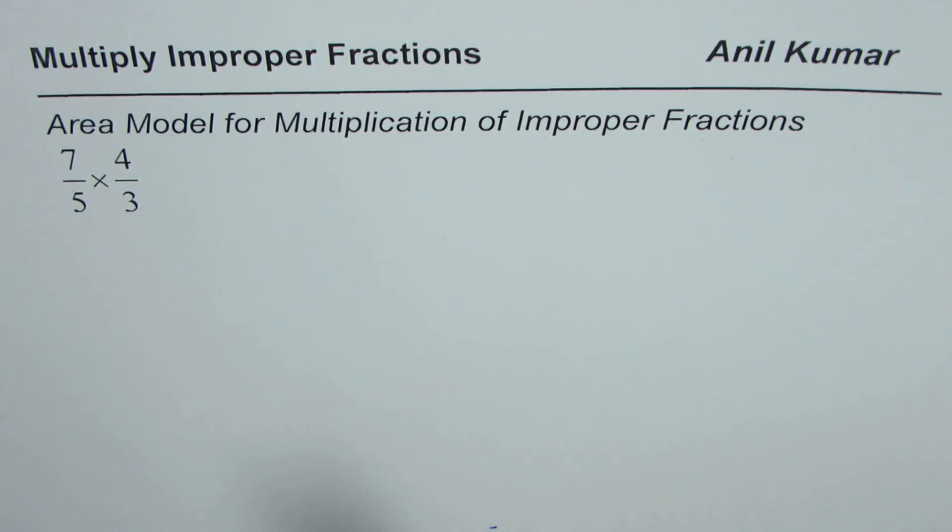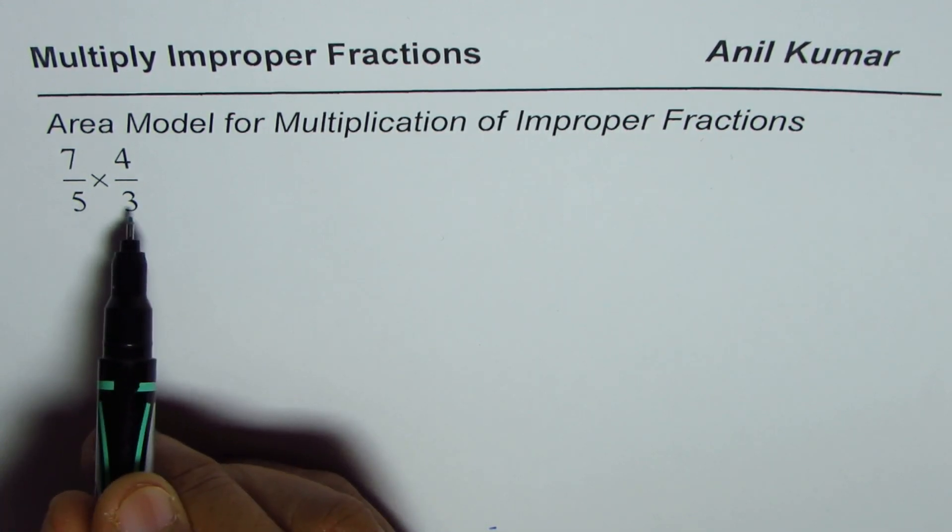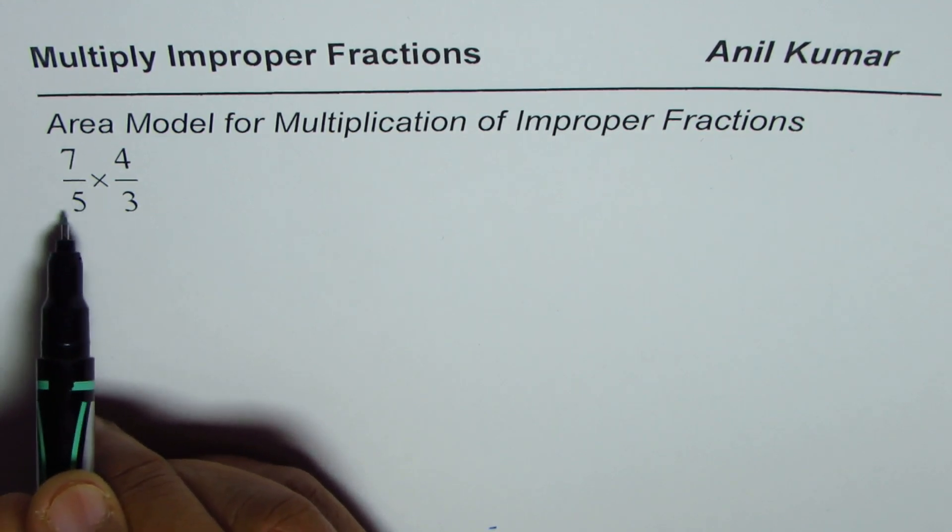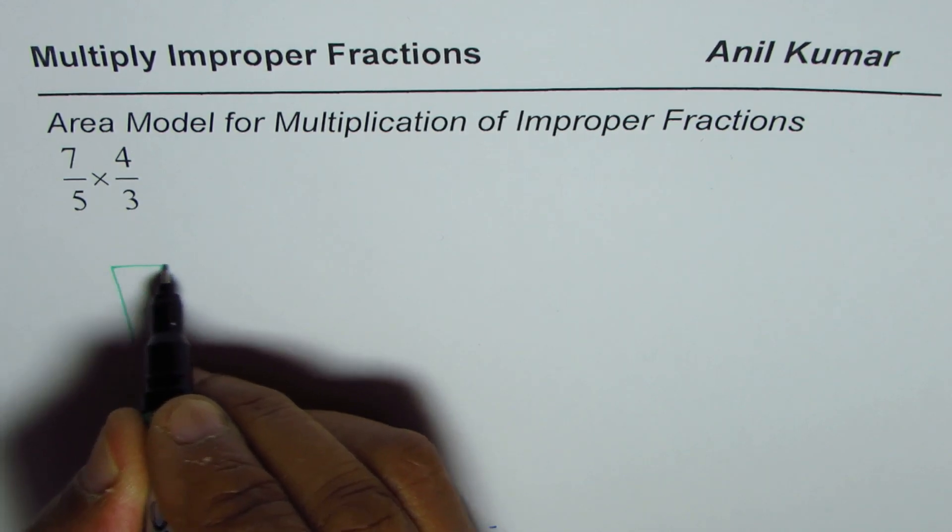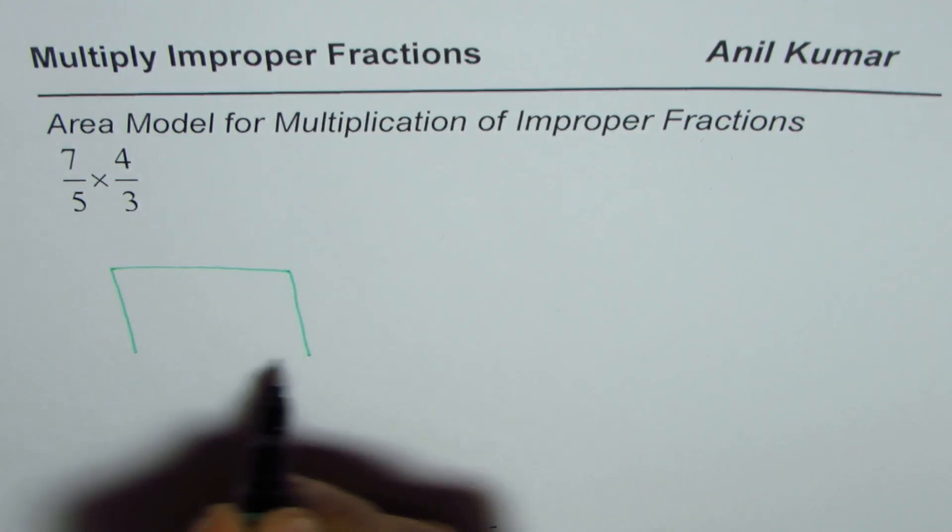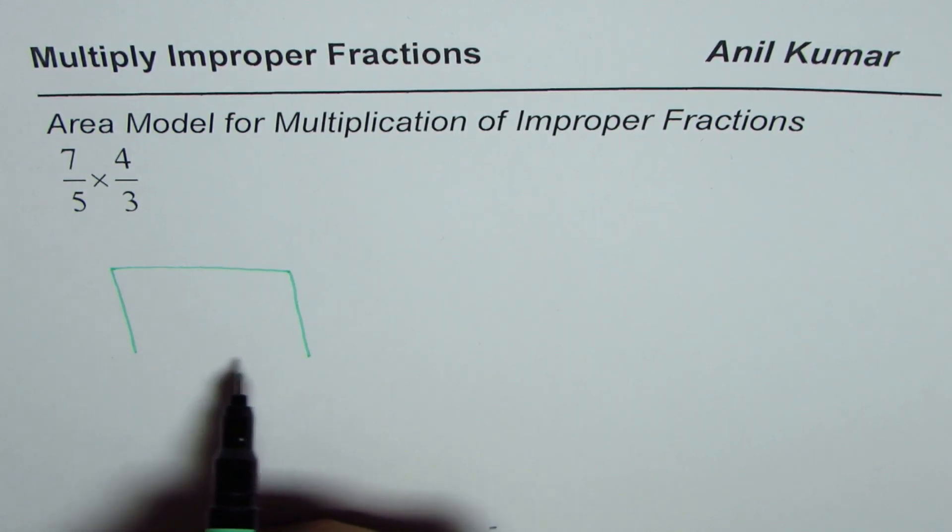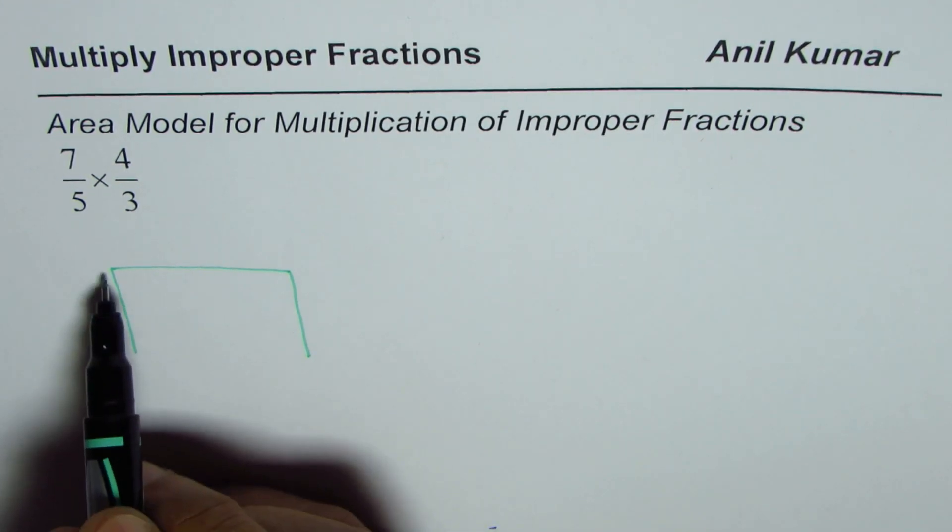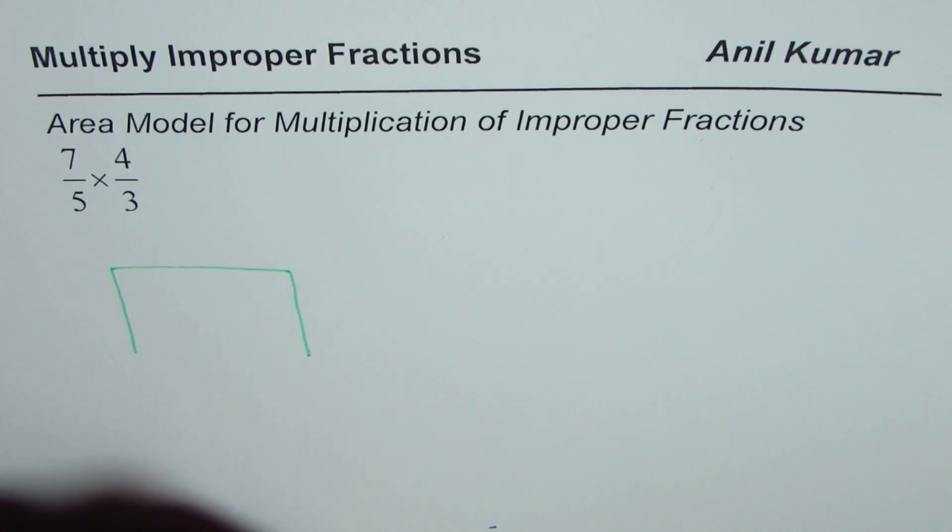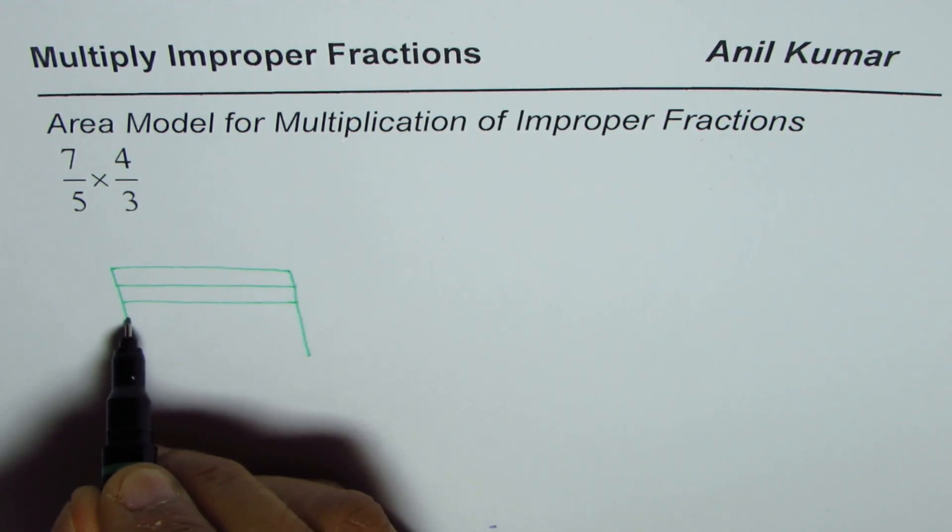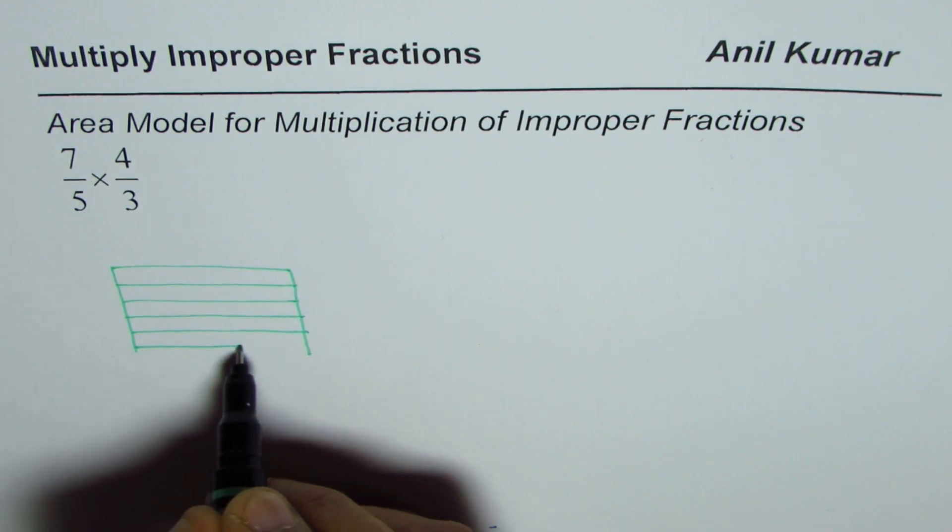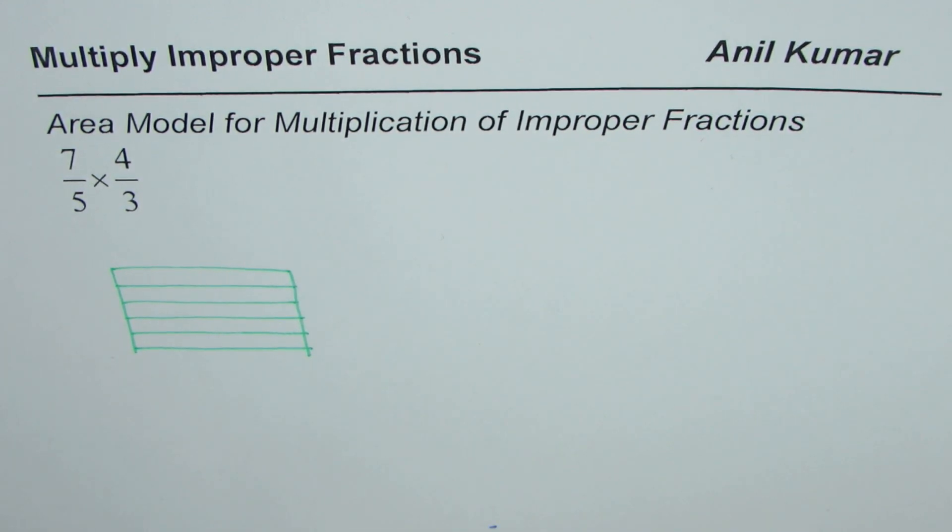Now first part is how to represent 7 over 5. Whenever we look at the denominator, it tells us the number of parts of the whole. So we'll consider a rectangle first. Let's say this is our rectangle. I'll keep the bottom open as sometimes we may have to adjust. We'll divide this rectangle into 5 equal parts. So let's say this is 1, 2, 3, 4, and 5, more or less. These are 5 equal parts.